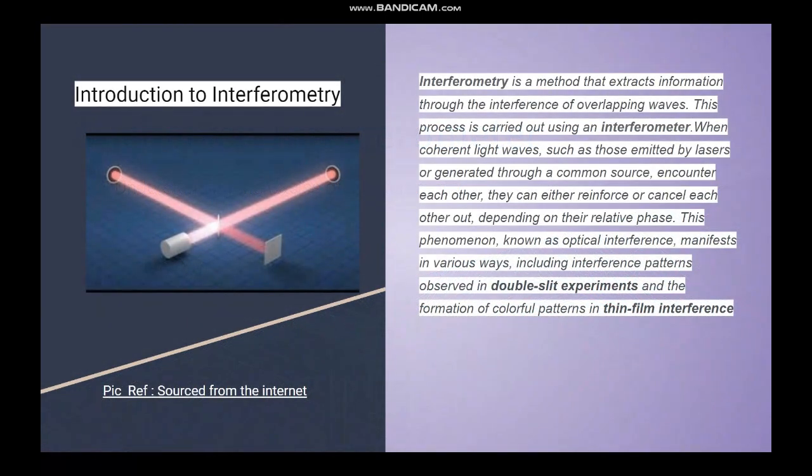So first, what is interferometry? Interferometry is a method that extracts information through the interference of overlapping waves. This process is carried out using an interferometer when coherent sources of light—meaning light sources coming from the same source, or at the same frequency and same phase difference—are used.